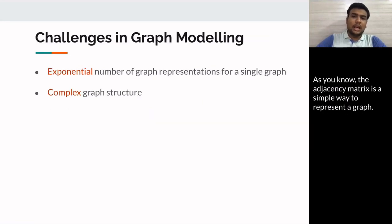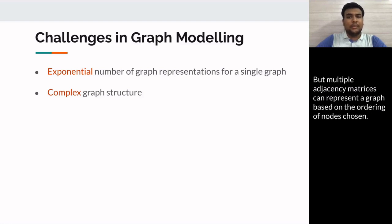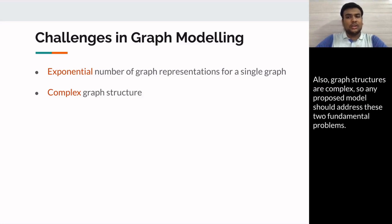As you know, the adjacency matrix is a simple way to represent a graph, but multiple adjacency matrices can represent a graph based on the ordering of nodes chosen. Also, graph structures are complex, so any proposed model should address these two fundamental problems.